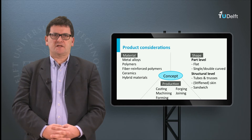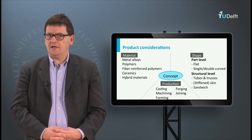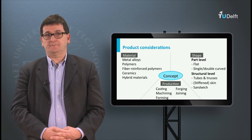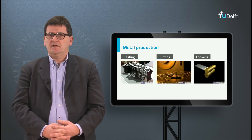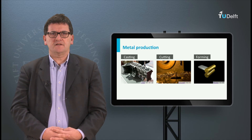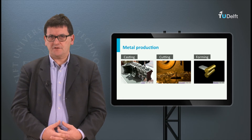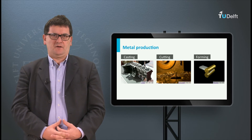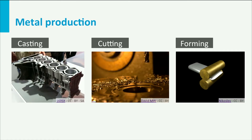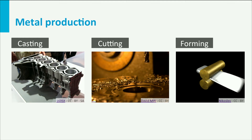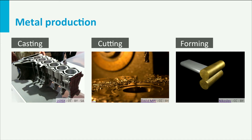A nice homework assignment would be: what are the impossible combinations in this slide? The applicable production methods are related to the material. First let's look at metal alloys. Most metals can be cast — the metal is heated above its melting temperature so the metal becomes liquid, and the liquid metal can be poured into a mould. After cooling down and removing the mould, we obtain our part.